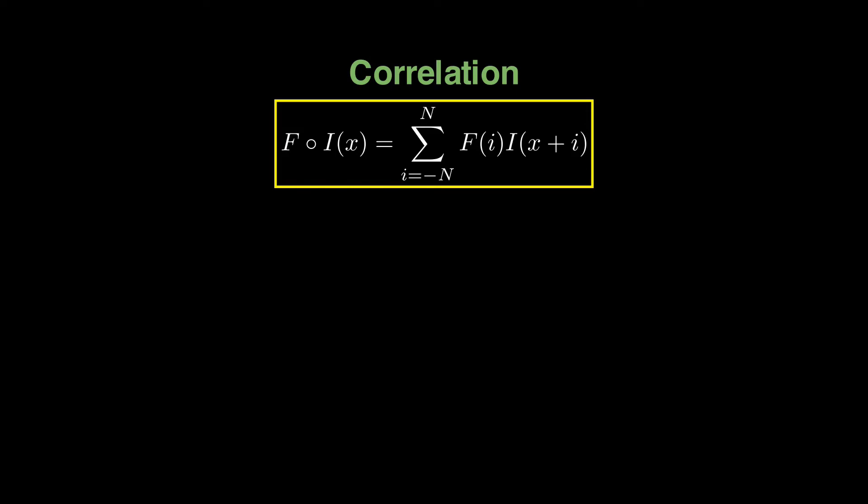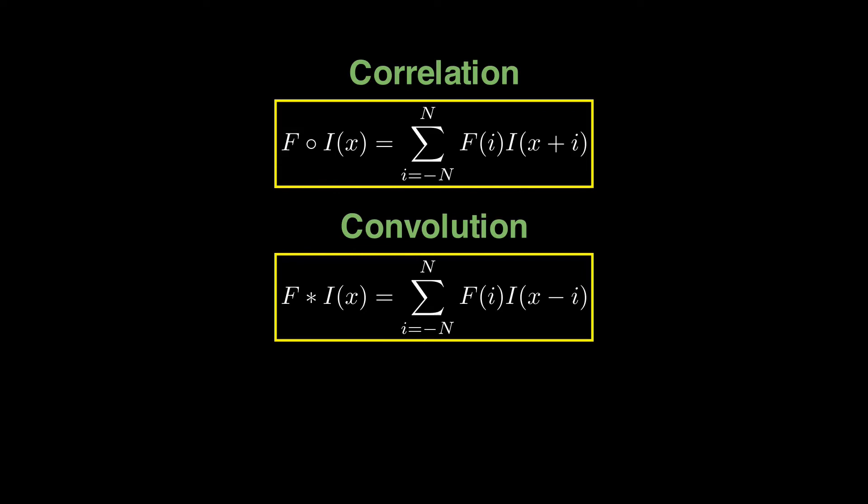The mathematical formulation for the convolution looks like this. As you can see, it is pretty much identical to the correlation, except that we are flipping the filter before doing the correlation. Also note that we are using star and not the little circle between F and I. In simple words, math is same for two operations, but convolution operation has additional interesting properties in signal processing.